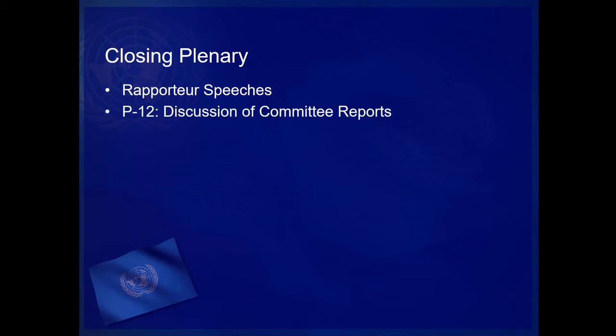For those committees that are subcommittees of the General Assembly — for example, First Committee or Sixth Committee — the General Assembly has four options. All are considered subsets of Rule P-12, Discussion of Committee Reports.